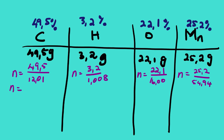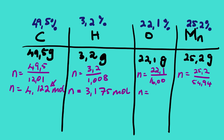From these calculations we get the following number of moles — I round off to three decimal places. Carbon: 4.122. Hydrogen: 3.175. Oxygen: 1.381. Manganese: 0.459.